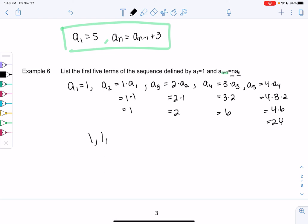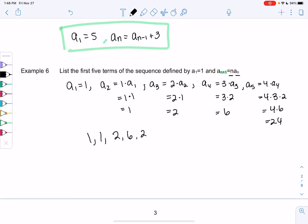So we get 1, 1, 2, 6, 24 for the first five terms.